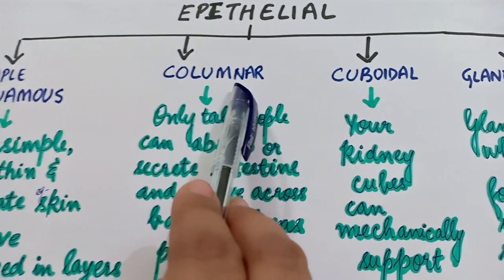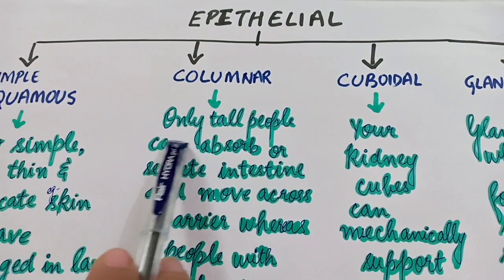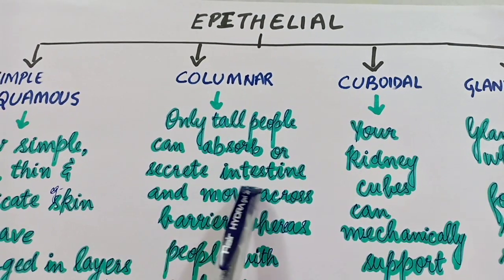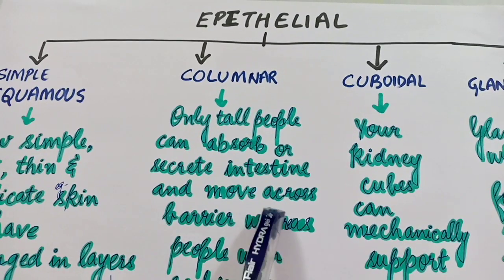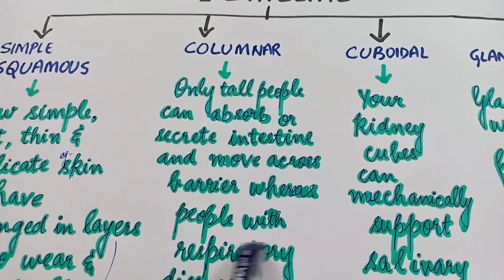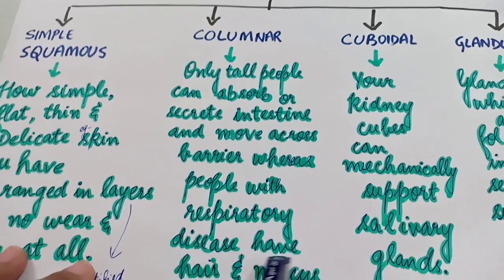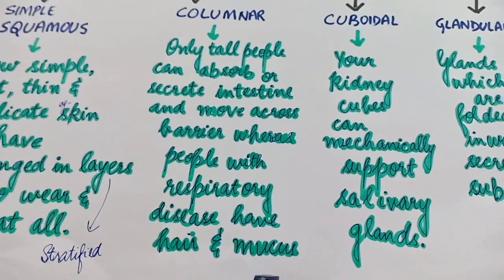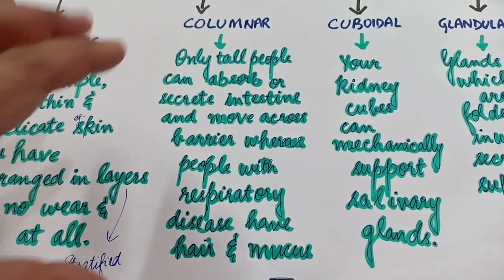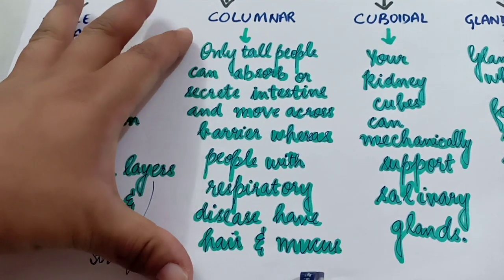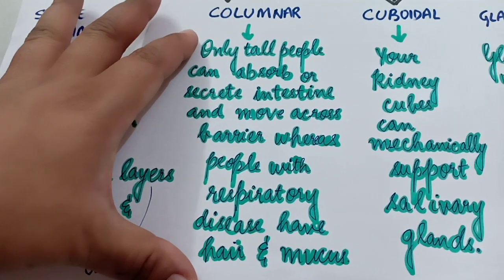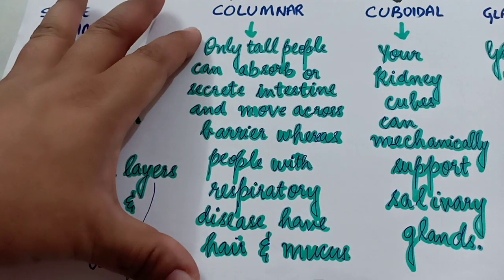Now let us move on to the second epithelial tissue: columnar epithelial tissue. The sentence to remember is: 'Only tall people can absorb or secrete in the intestine and move across the barrier. Whereas people with respiratory disease have hair and mucus.' You have to learn this sentence to learn the basic characteristics of columnar epithelial tissue.